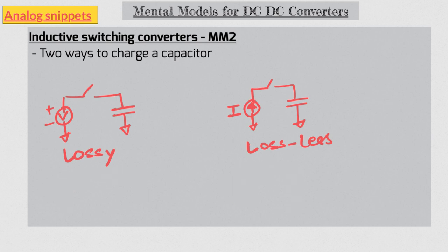If only we could design a current source which takes energy from an input supply and dumps it onto a capacitor, we would be able to transfer energy from a voltage source to a capacitor in a lossless manner. And by having different value of currents we can generate any voltage across this capacitor. And that is exactly what an inductive switching converter does. So here is our second mental model.